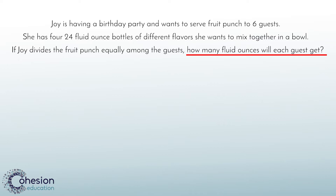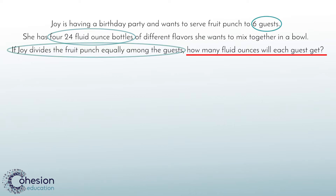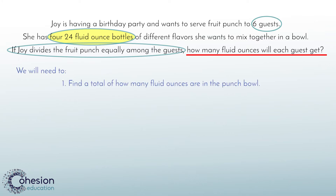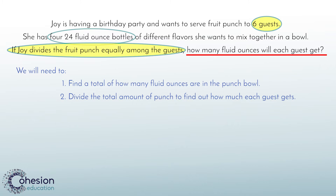Next we need to circle any important information or facts to be able to successfully solve. In this case we will circle six guests, four 24 fluid ounce bottles, and 'if Joy divides the fruit punch equally among guests.' This information is going to be the directions we will use when determining our steps and whether we need to multiply or divide. The statement 'four 24 fluid ounce bottles' tells us that we will need to find a total of how many fluid ounces are in the punch bowl. The statement 'six guests and divides equally among the guests' tells us we will need to divide the total amount of punch to find out how much each guest gets.